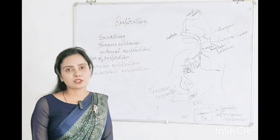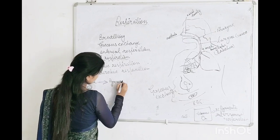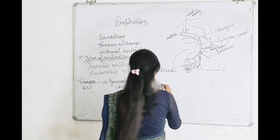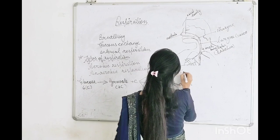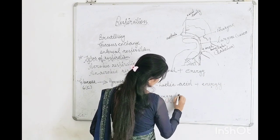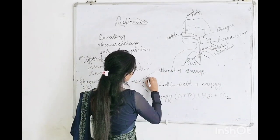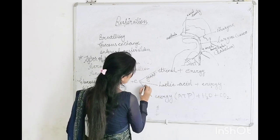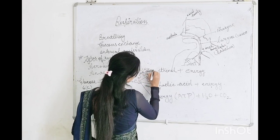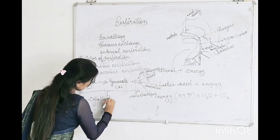Now let's understand this by the reaction. Glucose — 6 carbon — breaks down into pyruvate, which is 3 carbon. And pyruvate breaks down into lactic acid, plus energy, plus water molecule, plus carbon dioxide. Lactic acid fermentation occurs mainly in yeast and also in muscles. These both occur in the absence of oxygen. Aerobic respiration occurs in the mitochondria, while anaerobic respiration completes in the cytoplasm.